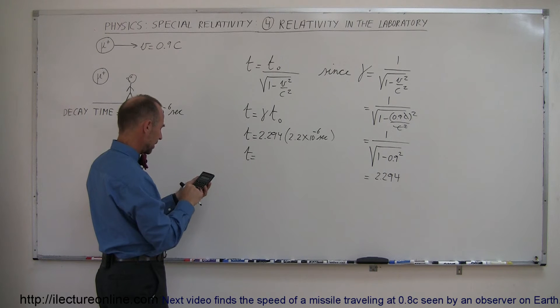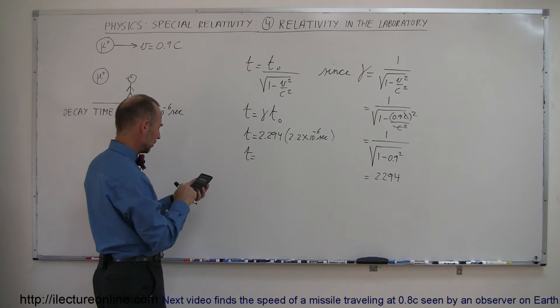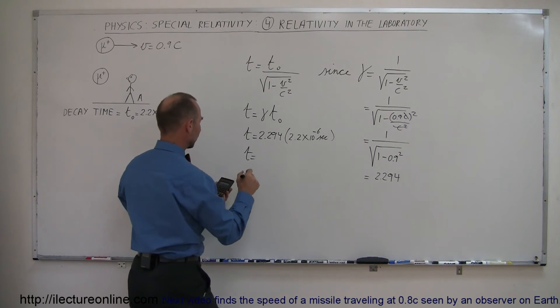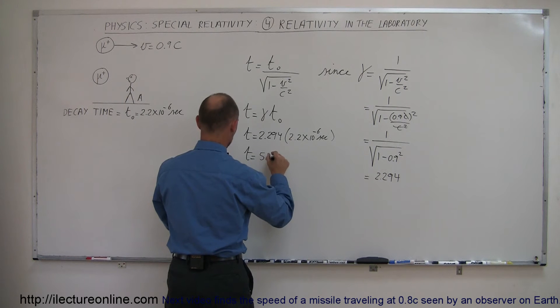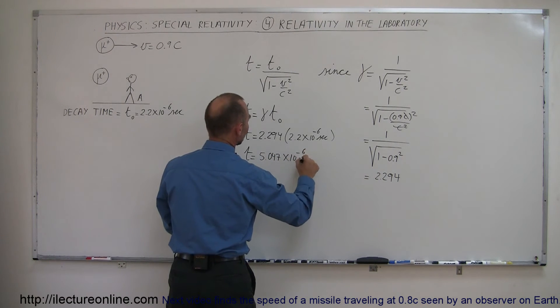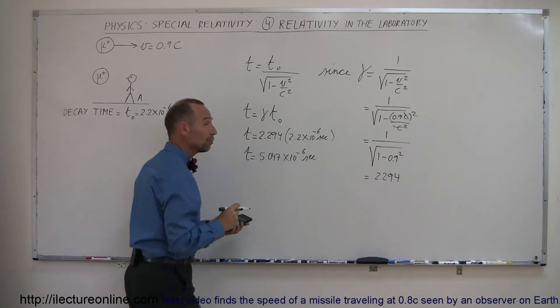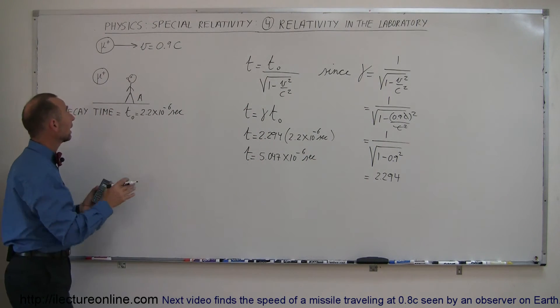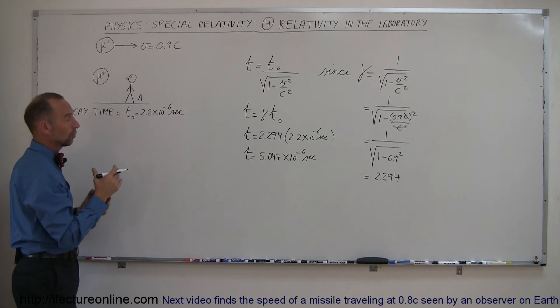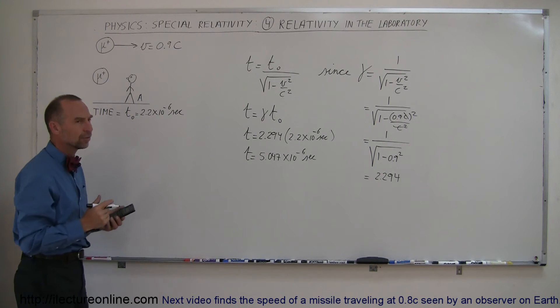So that times 2.2 times 10 to the minus 6 equals, so this would be 5.047 times 10 to the minus 6 seconds. So a positive muon, if it's created and moving at 0.9 c will last more than twice as long before it decays.